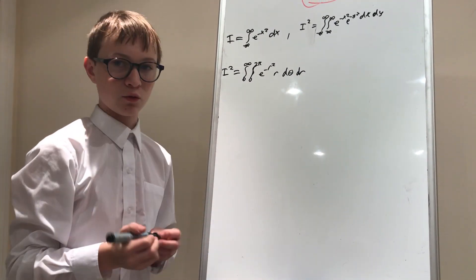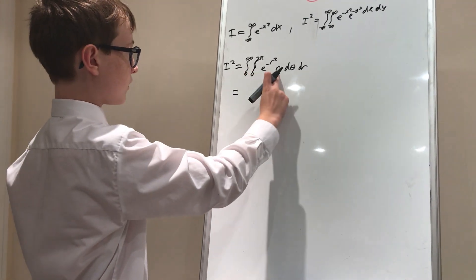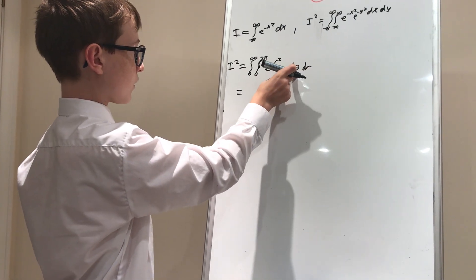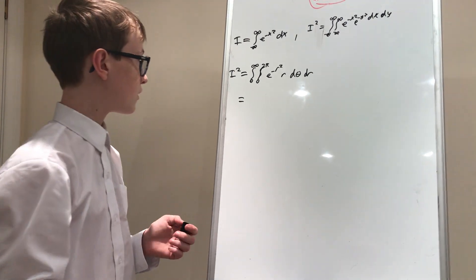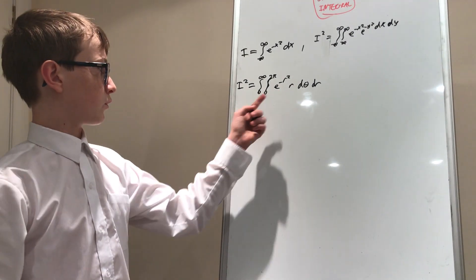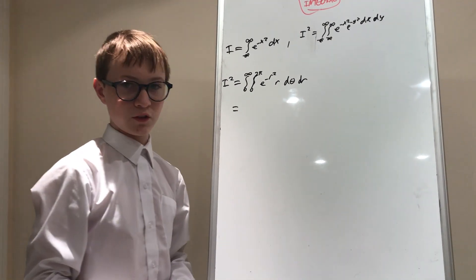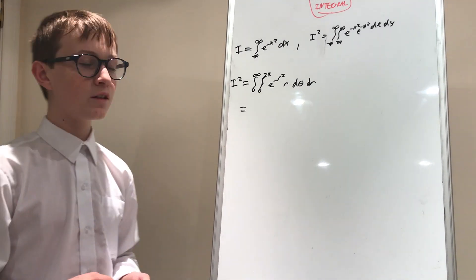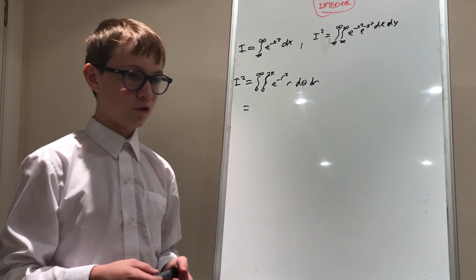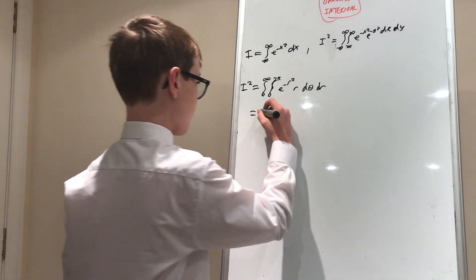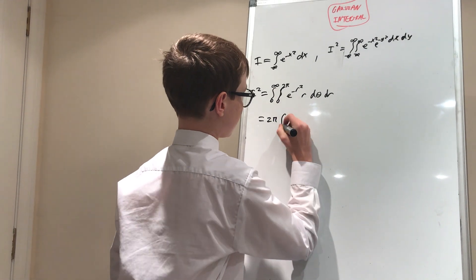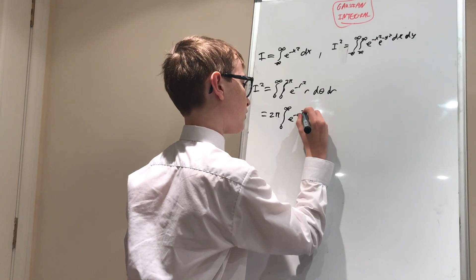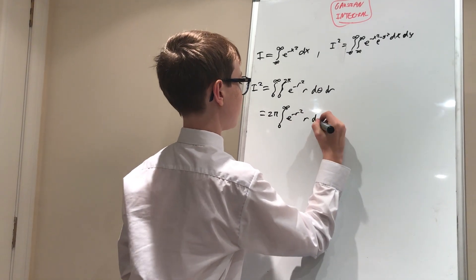And now this is where it comes in. All of this whole thing here is a constant in the theta world. So actually, this first integral is just the integral between zero and two pi of d theta, which is easy. That's just two pi minus zero, which is two pi, times the integral between zero and infinity of e to the negative r squared times r dr.